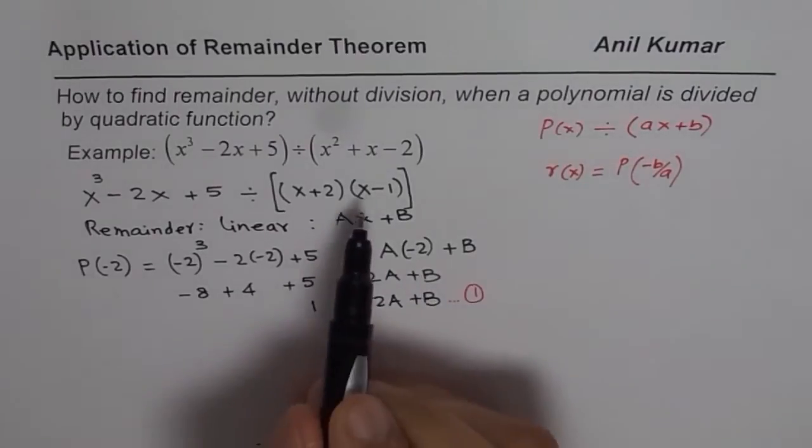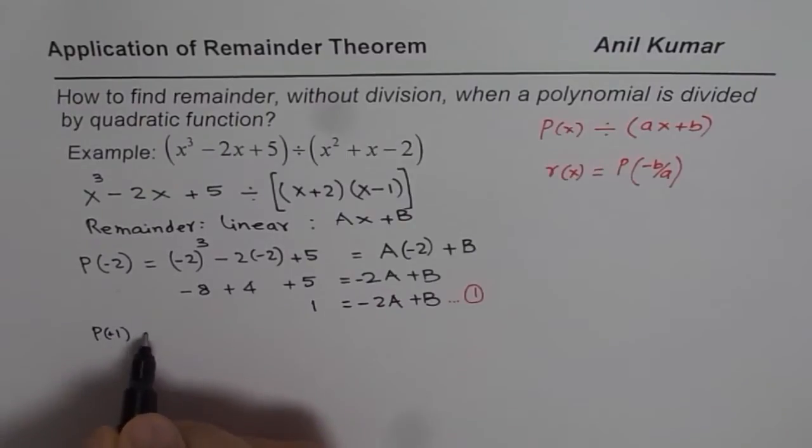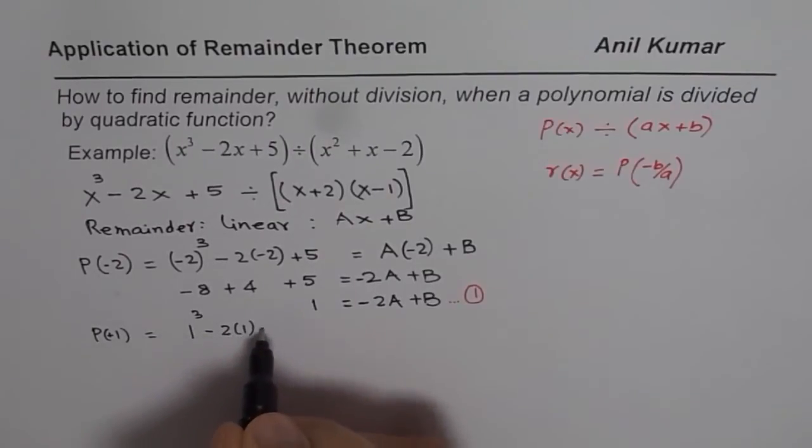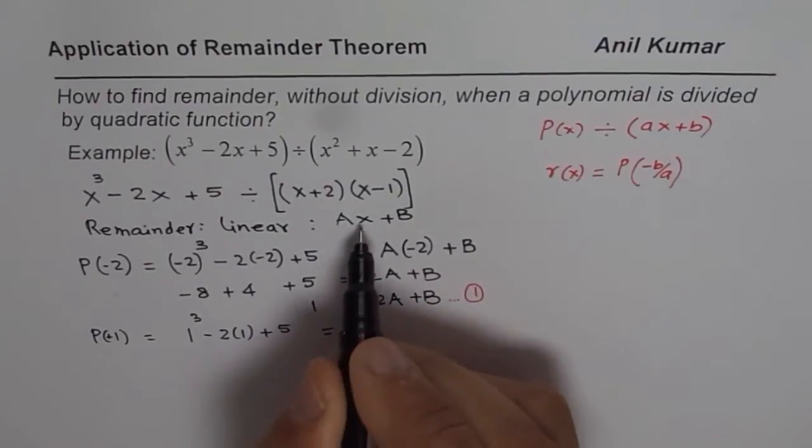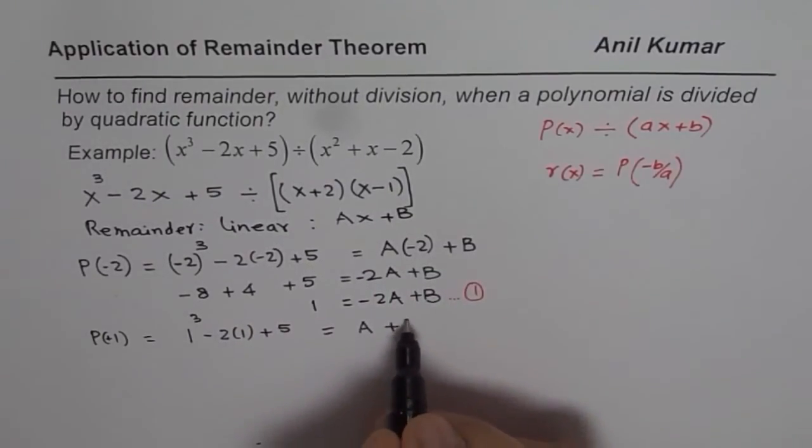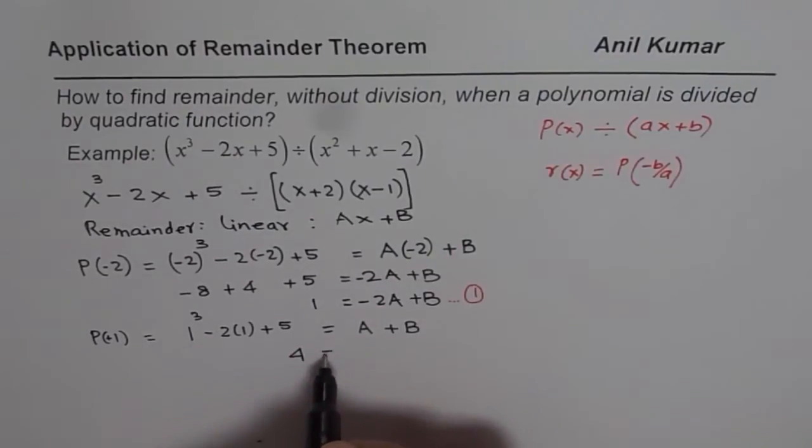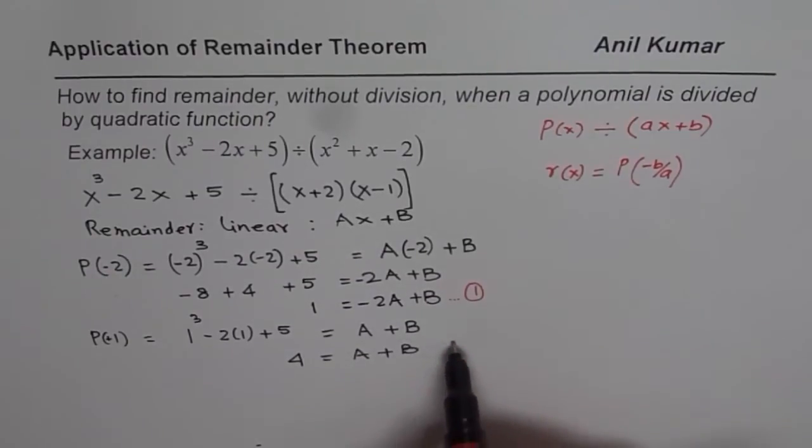Similarly, if I substitute plus 1, then the value of the polynomial for plus 1 will be—we'll substitute 1 here—so we have 1³ minus 2 times 1 plus 5, which should equal the remainder. So I'll substitute 1 for X, I get A plus B. That simplifies to 1 minus 2 plus 5. That's 4 equals A plus B. Let me call this equation number 2.